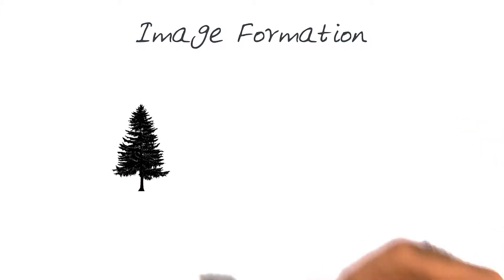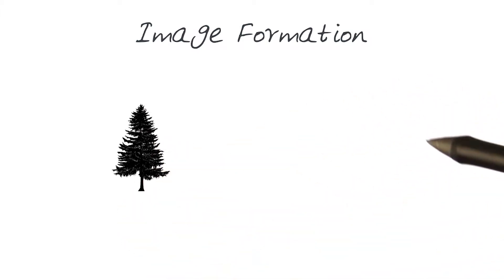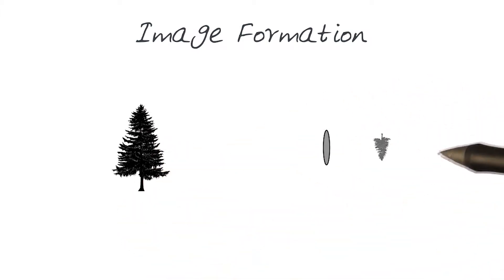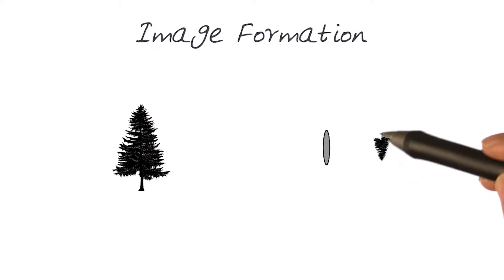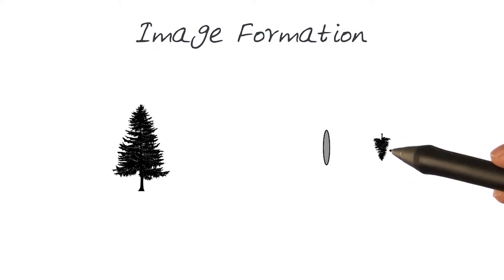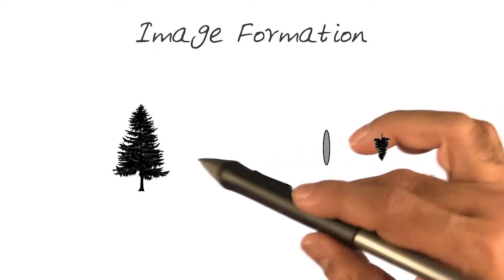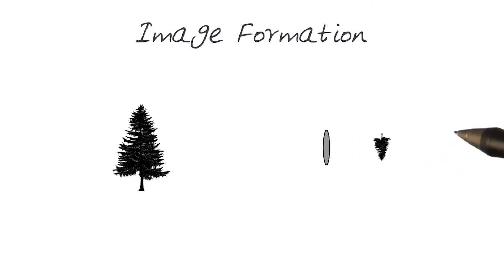Let's study some of the basic premises of how an image is formed from a 3D scene. We start off with just a simple representation of a 3D scene. We have a lens, and because of this lens, we can actually create an image of this 3D scene on the other side of the lens.